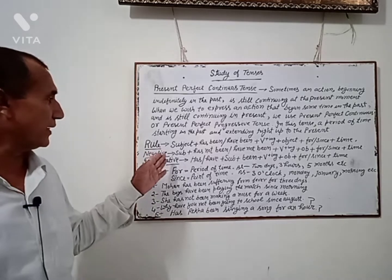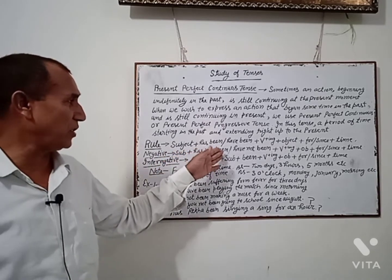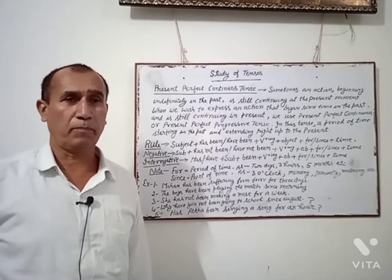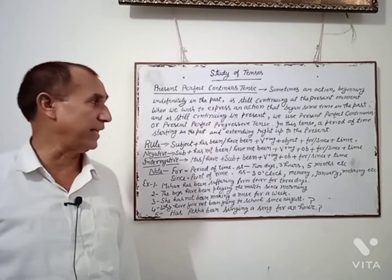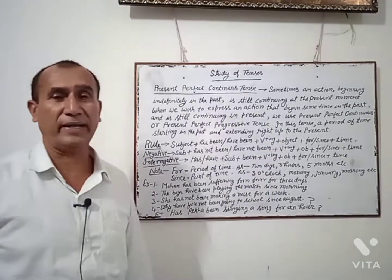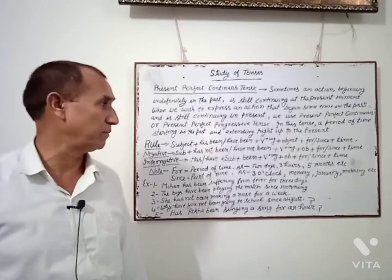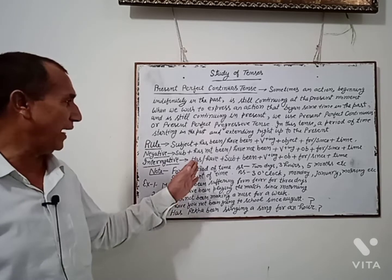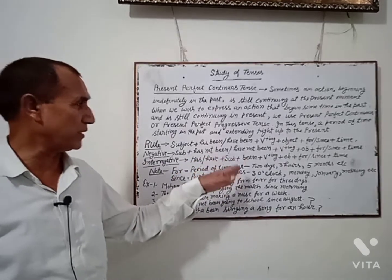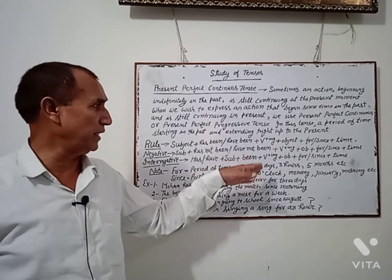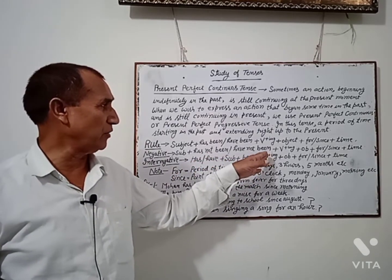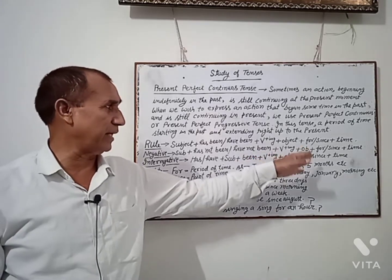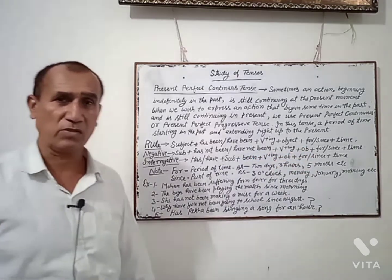In negative: Subject + has not been / have not been + V-ing + Object + for/since + time. In interrogative: Has/Have + Subject + been + V-ing + Object + for/since + time.